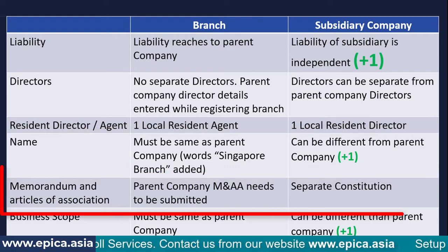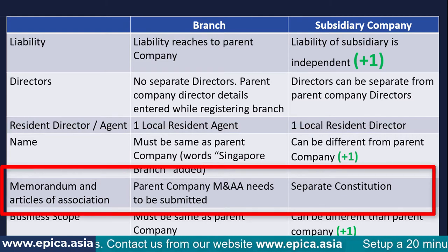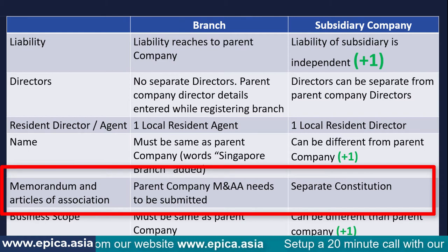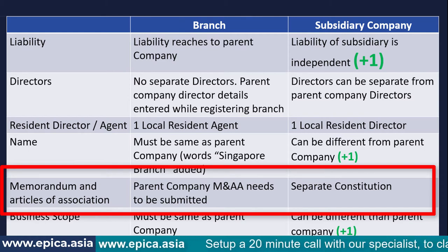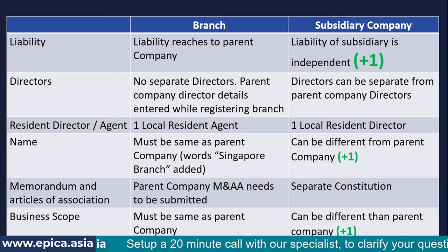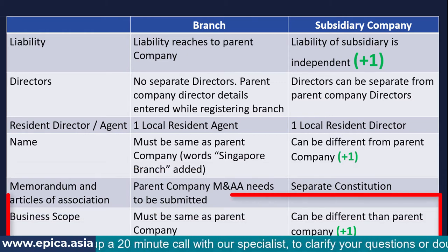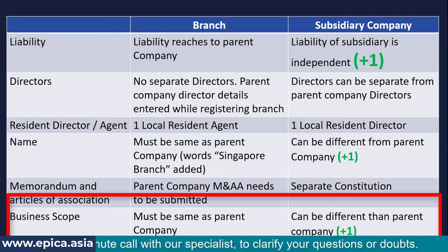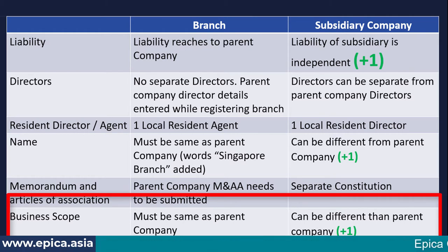As far as memorandum and articles of association are concerned, a branch follows the memorandum and articles of association of the parent company, whereas a separate constitution is prepared for a subsidiary entity. The business scope of a subsidiary can be separate from or the same as that of the parent entity, so obviously the subsidiary scores here.